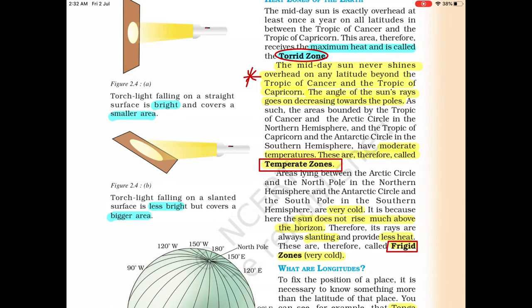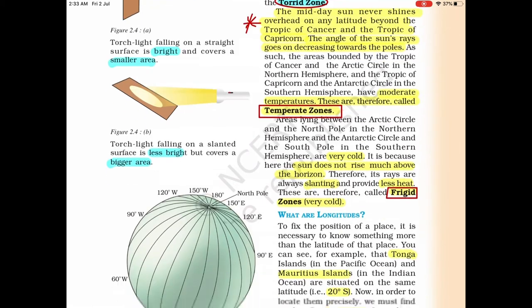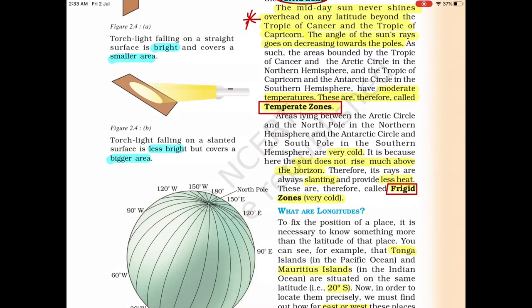The Torrid zone is the maximum heat zone that absorbs the most heat from the Sun, extending from the Tropic of Cancer to Tropic of Capricorn. The Temperate zone extends from 23.5 degrees north to 63.5 degrees north latitude, and similarly from 23.5 degrees south to 63.5 degrees south latitude. The Frigid zone is the coldest zone, extending from 63.5 degrees south to the south pole and from 63.5 degrees north to the north pole.